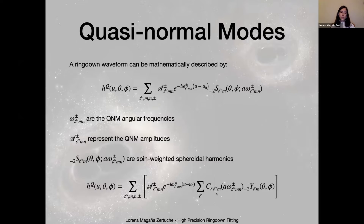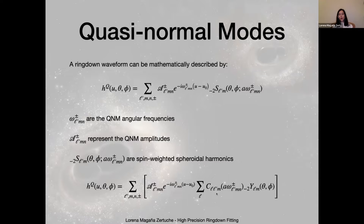We do this for two reasons. The first reason is that all the numerical relativity waveforms are already in spherical harmonics, so it's just easy to use them. The second reason is very important: all of the frequencies that we're working with are actually complex — they're not purely imaginary or purely real. Since they are complex, the spheroidal functions do not necessarily form a complete basis, but the spherical harmonics do. So we switched to this.